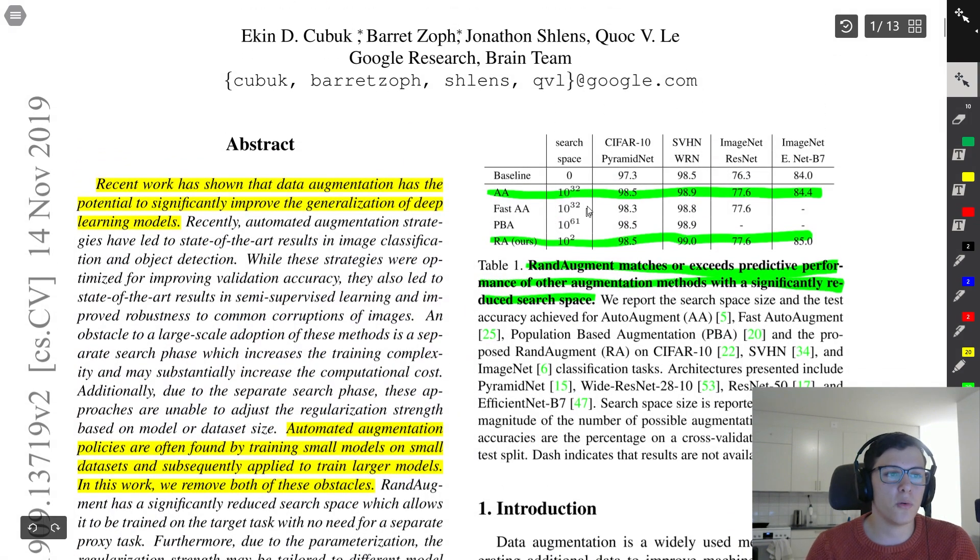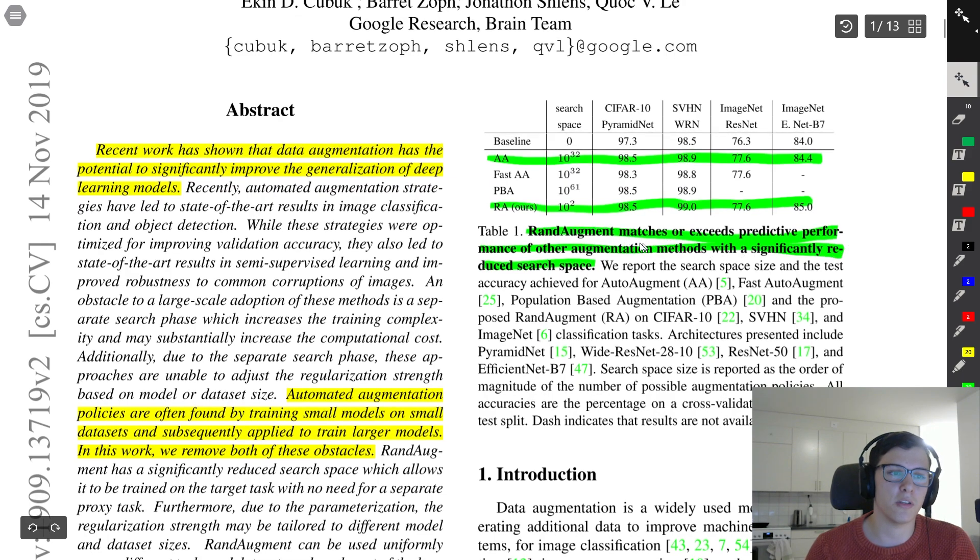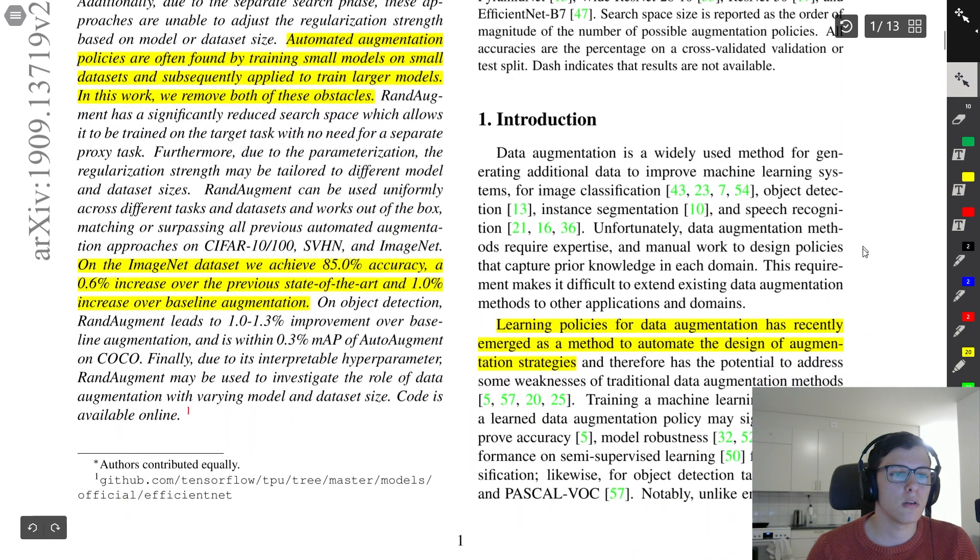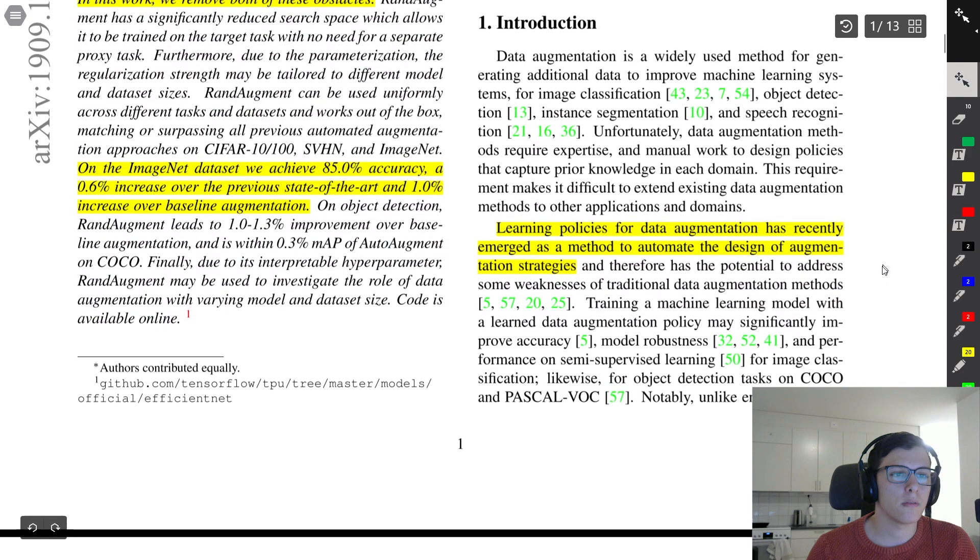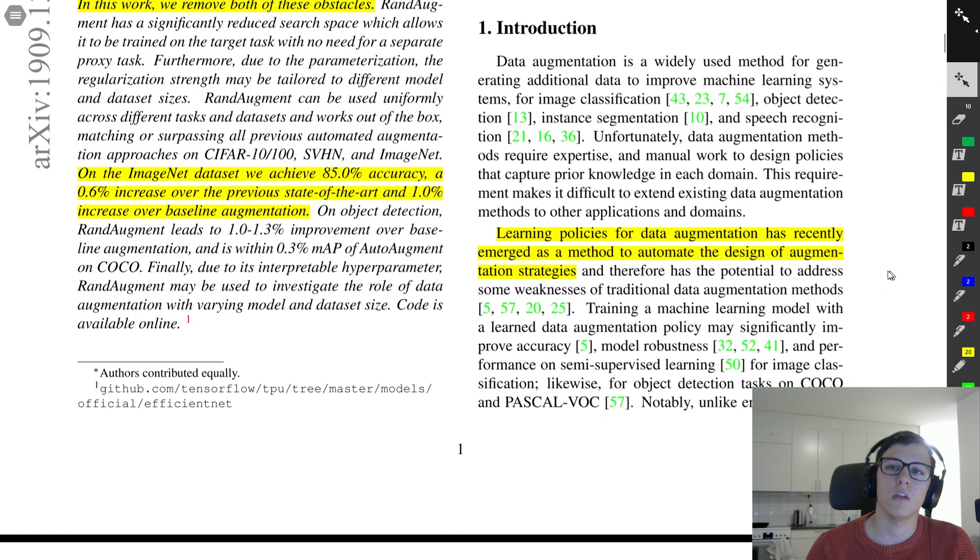Here we can see a comparison to some different data augmentation policies. The ones that are perhaps most important here are auto-augment, where you can see the search space is much, much greater than RandAugment, but the performance on these various datasets are pretty much on the same level. The conclusion here is that RandAugment matches or exceeds the performance of other augmentation methods.